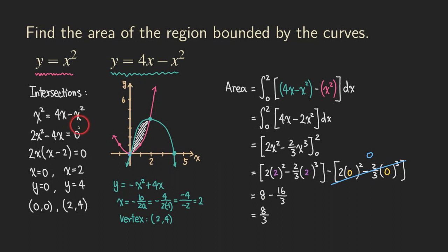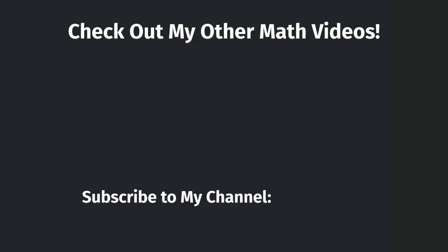So that's the area for this region. The process is: first find the intersections, then draw a rough sketch of the region. Once you see the region, identify which graph is the larger (top) function and which is the smaller (bottom) function, then subtract. For the limits of integration with respect to x, use the leftmost point as the lower limit and the rightmost point as the upper limit. If you liked this video, please subscribe, leave a comment, give a like, and check out my other videos. Thank you for watching.